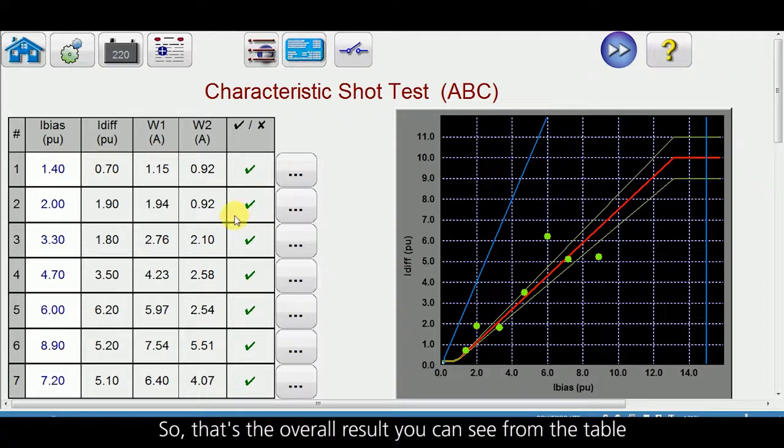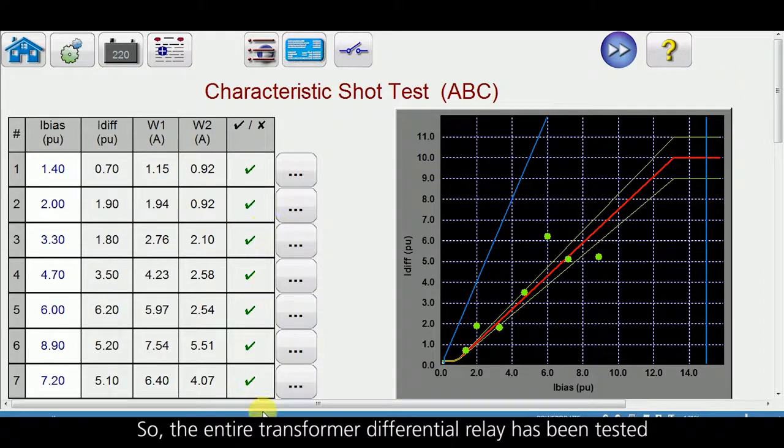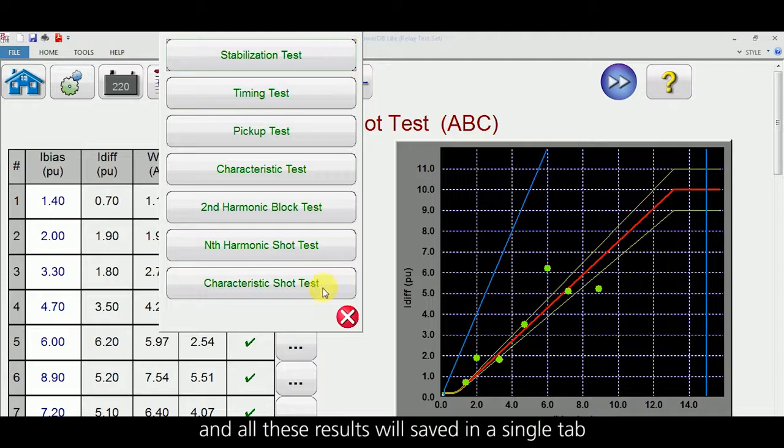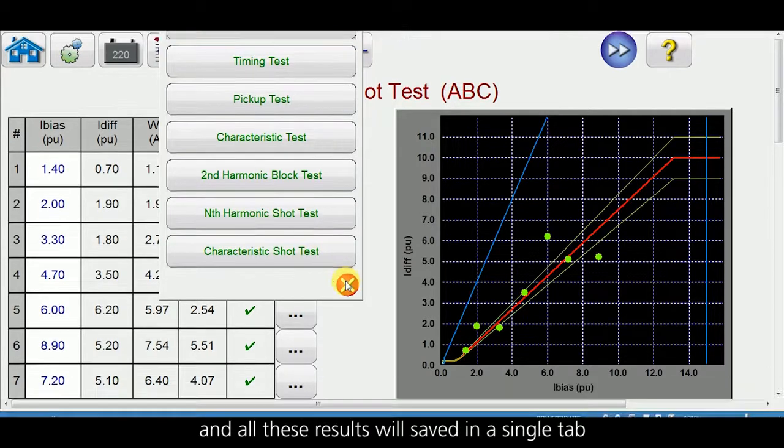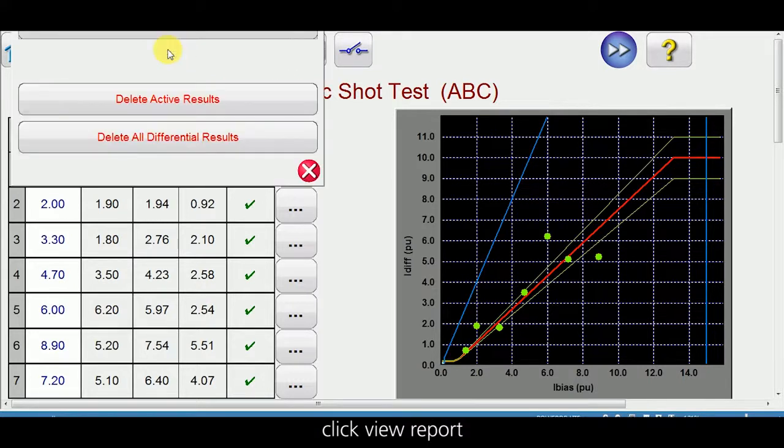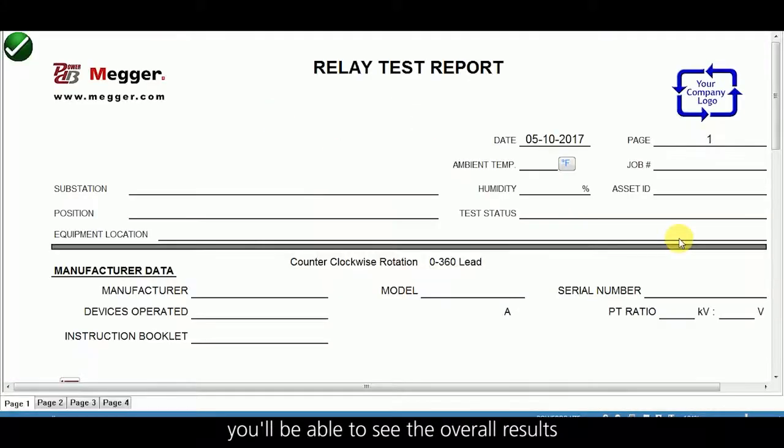That is the overall result you can see from the table. The entire transformer differential relay has been tested with all these test cases shown here, and all these results will be saved in a single tab. When you click here, click view report, you will be able to see the overall results.